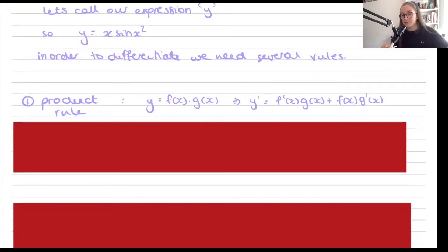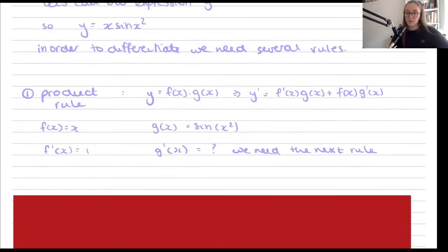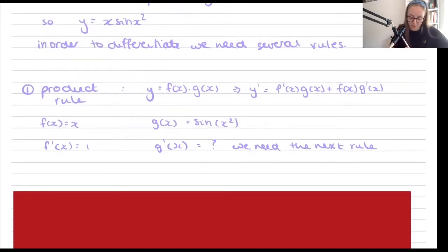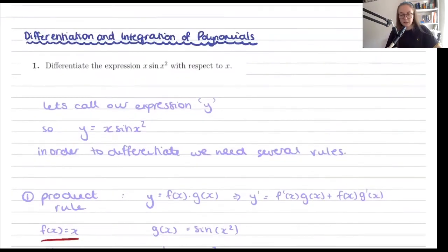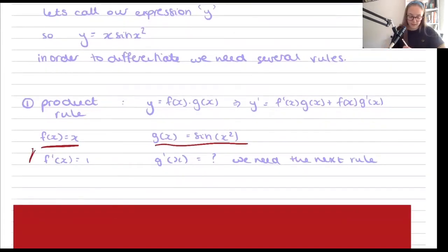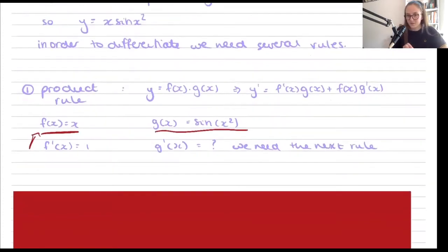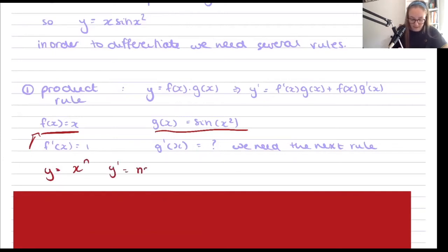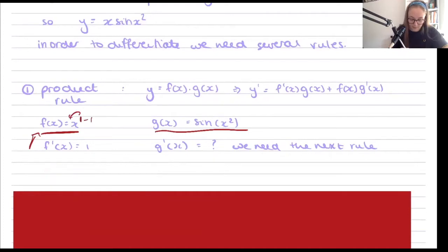If you're unfamiliar with the product rule, it's useful to write down your terms. Here f(x) = x and g(x) = sin(x²). Differentiating f(x) = x is easy: using the rule that if y = xⁿ then y' = n·xⁿ⁻¹, x is technically x¹, so the derivative is 1.